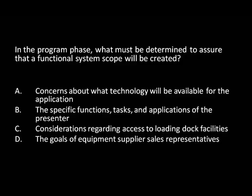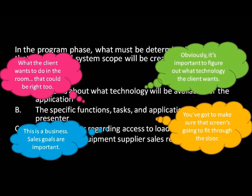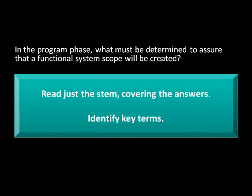Let's look at an example drawn from one of the CTS practice exams. In the program phase, what must be determined to assure that a functional system scope will be created? Do you see more than one correct answer here? This is one of those choose-the-best-answer questions. All the answer choices describe information you're going to have to discover at some point during the AV project. If you put your focus on the possible answer choices first, pretty soon you're way overthinking all the possible answers and no longer really thinking about the question at all. This is why it's best to cover the answers and read the question by itself first. All the information that you need to answer the question is here. If you need to make a lot of assumptions or make a logical leap to topics not mentioned in the STEM to make an answer choice work, that answer choice is probably wrong.